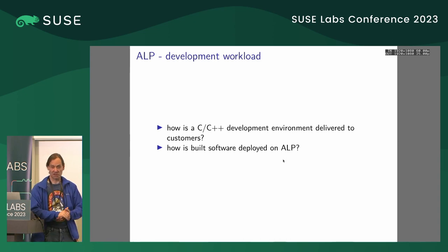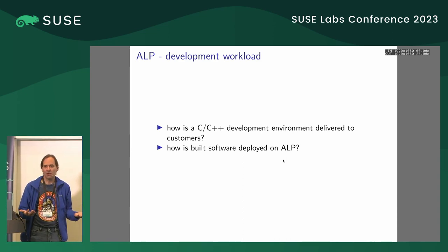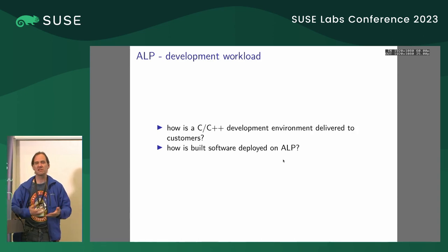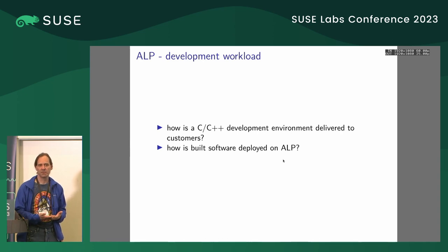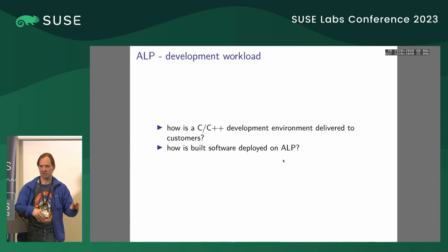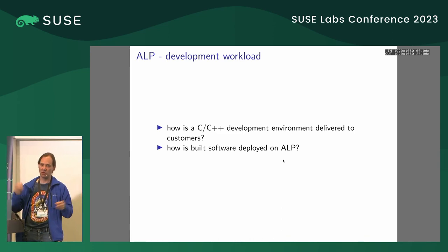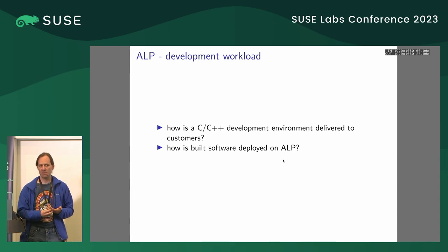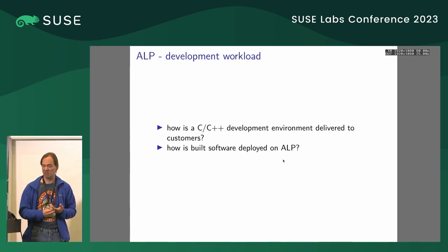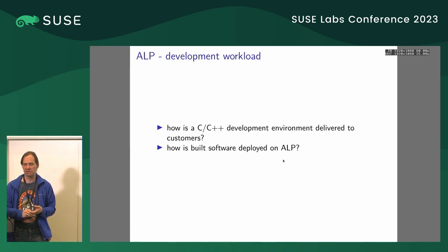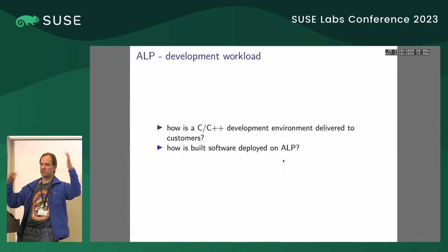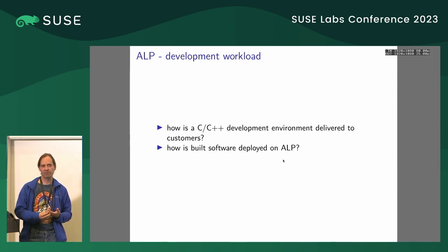Now to the questions part. How do we plan to deliver a C or C++ development environment to the customer? On SLEE 15 we had the development module — there's a lot of stuff, you find your packages and use them. I understand that for ALP there's also a set of packages in the pool, but in the new ALP world it should be a workload of some kind. I'm not sure if it's then supposed to be a development workstation workload complete with a GNOME desktop or whatever.